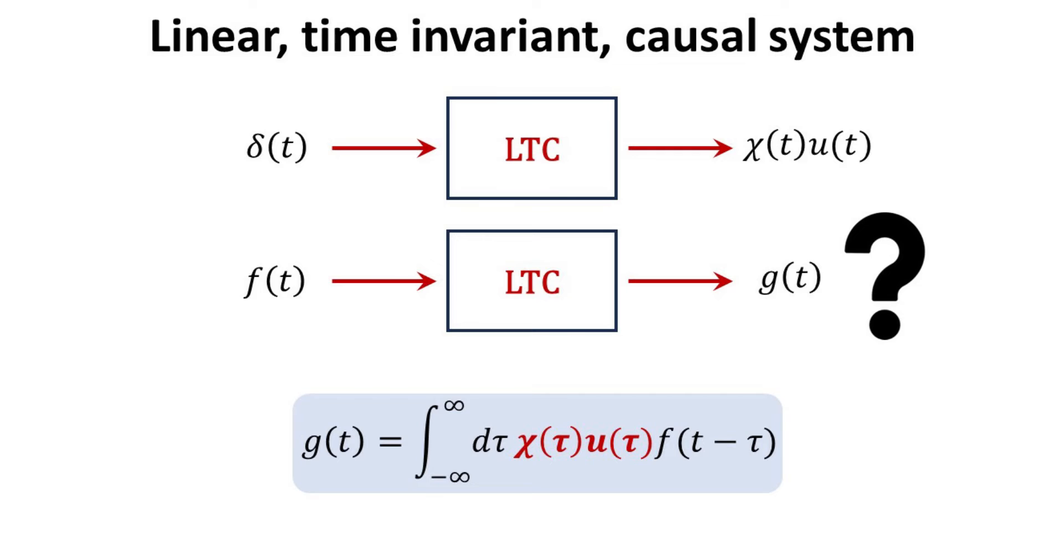In linear system theory, one can show that the behavior of the output Gt of a LTC system can be mathematically described by the convolution of the input Ft with the impulse response of the system. This is the crucial starting point for subsequent discussion.